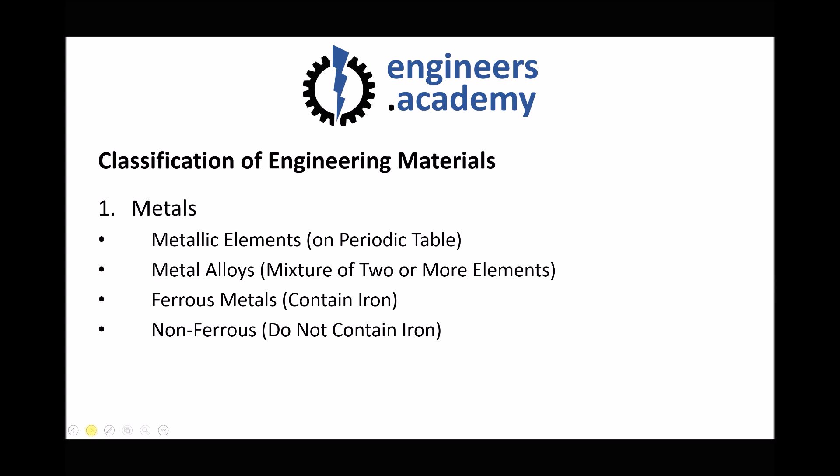When we talk about metals we should also consider the difference between ferrous and non-ferrous metals. Ferrous metals always contain iron — examples include cast iron, steel, and stainless steel. Non-ferrous metals don't contain iron; these can be pure metals such as copper, aluminium, and tin, or metal alloys such as brass and bronze. The key distinction is simply whether the metal contains iron or not.